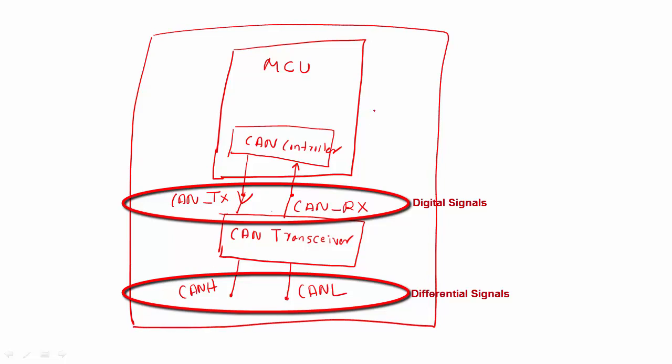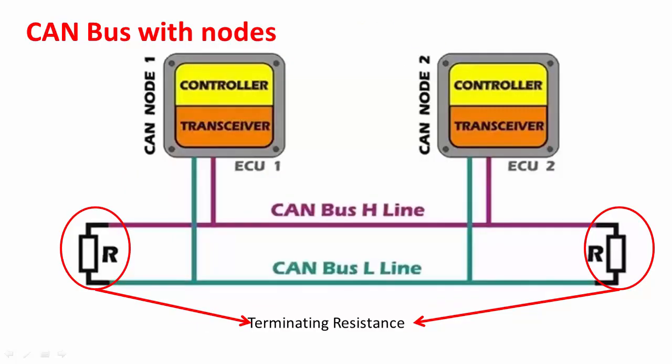And this is what we call as a node. So a CAN bus will be having basically two lines: CAN H line and CAN L line. And both lines are terminated by a termination resistor, that we call as RL.